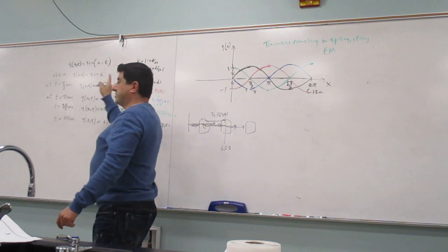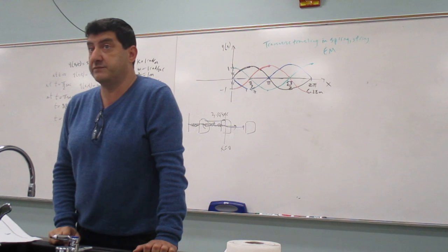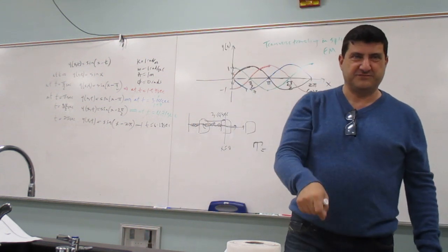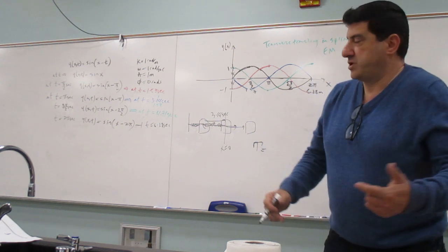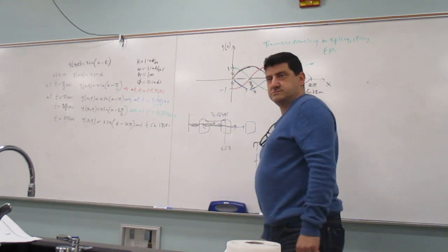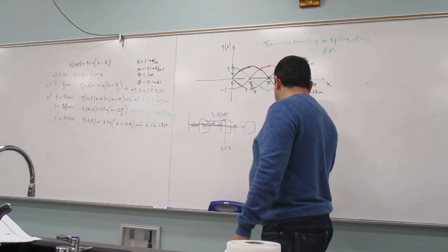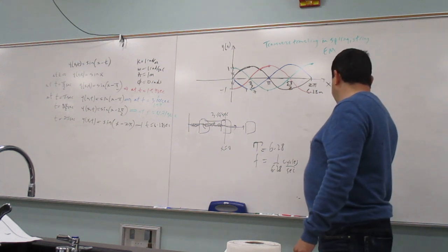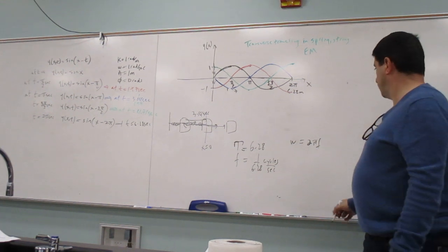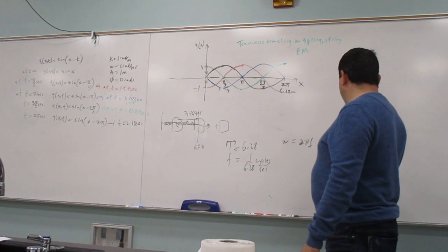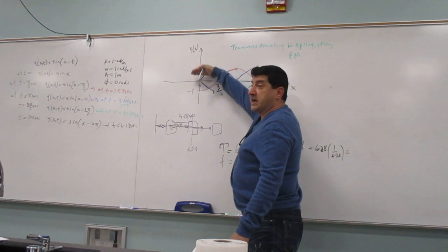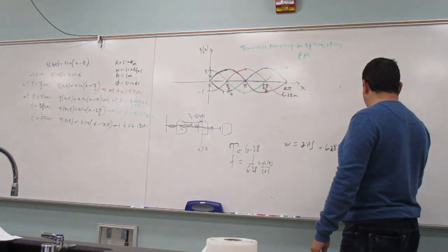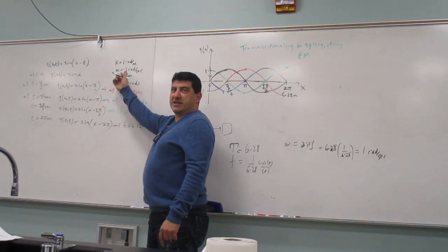At 6.28 seconds it returns to what it looked like at the origin. So the period of that wave element is 6.28 seconds. The frequency is 1 over 6.28 seconds — cycles per second. Omega is 2 pi f. Since 2 pi is 6.28, f is 1 over 6.28, giving omega equal to 1 radian per second.